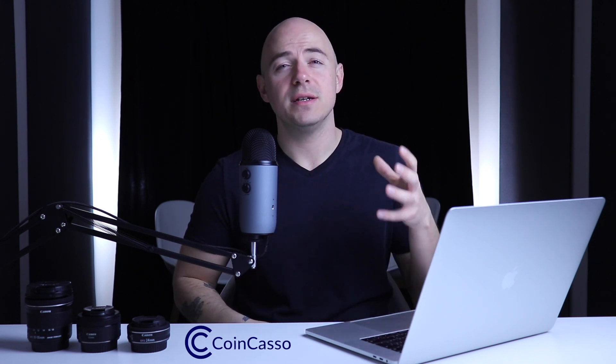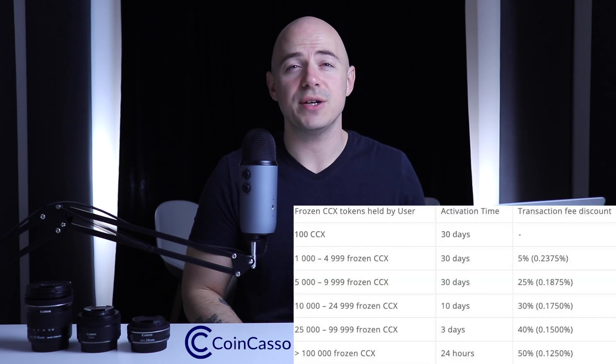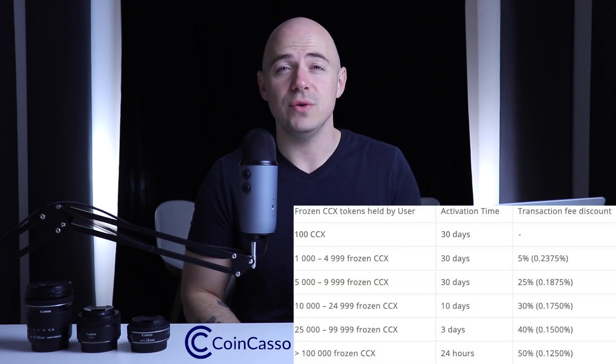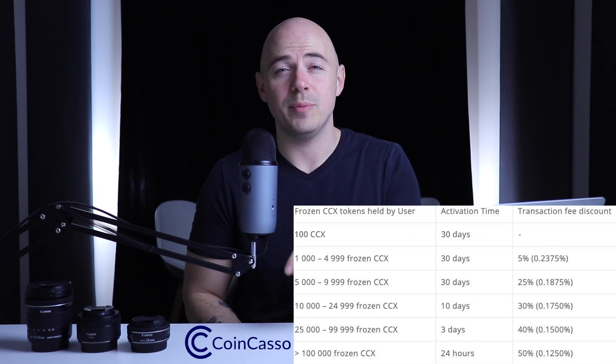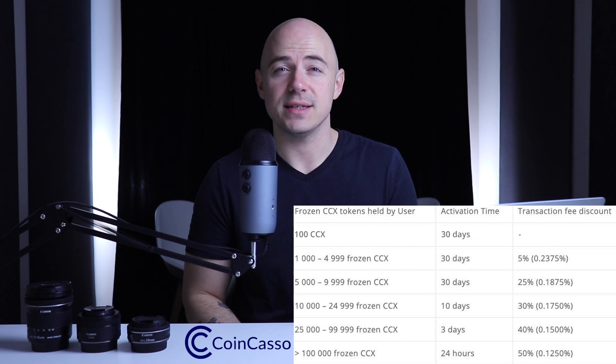Next up, we have a utility token. A utility token is built to provide investors something other than money. For example, many cryptocurrency exchange platforms offer tokens to their investors, and those tokens are actually used to reduce the transaction fees for people trading on their platform who hold their tokens. So it has no monetary value, but you actually get a discount from using them.